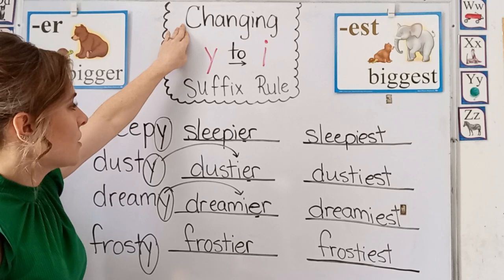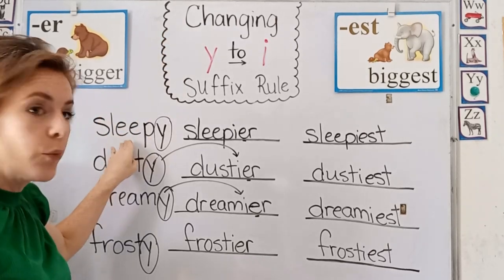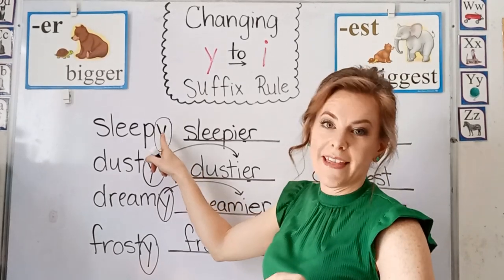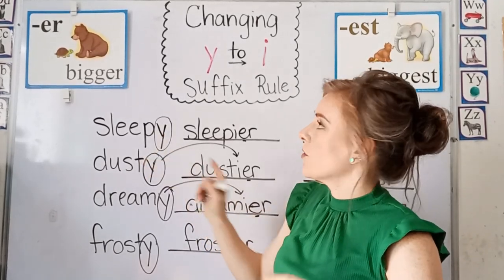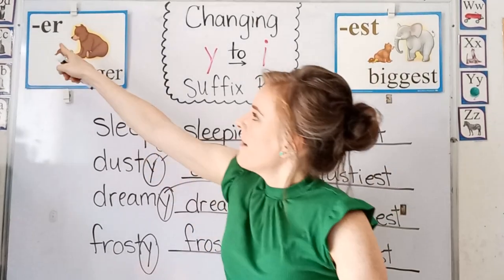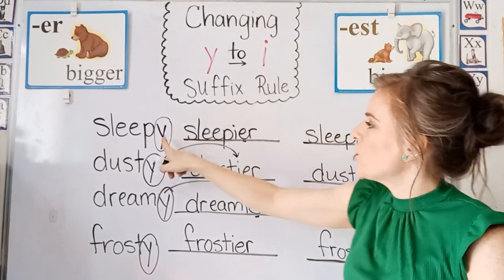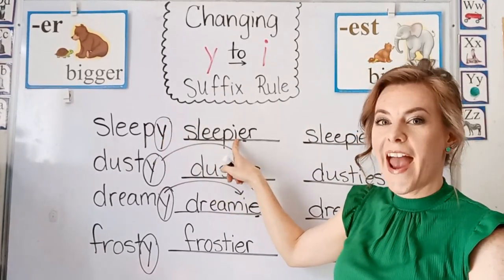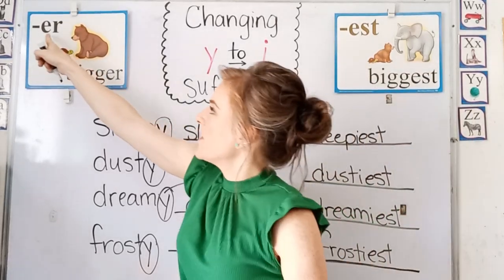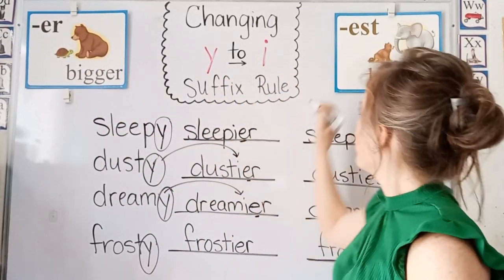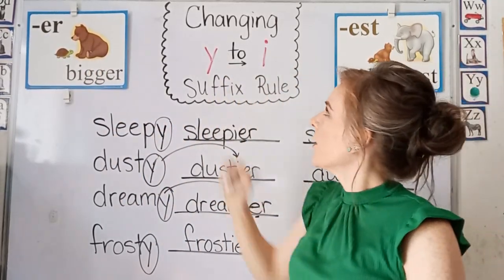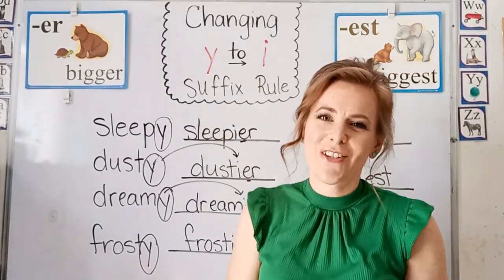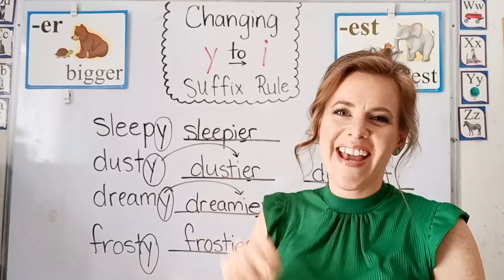So for this suffix rule, when you have a root word and there is a Y at the end of your root word and you're going to add a suffix that begins with an E, you change the Y to an I before adding your suffix that begins with an E. This is your changing Y to I suffix rule. Very good students. I'll see you next time. Bye bye.